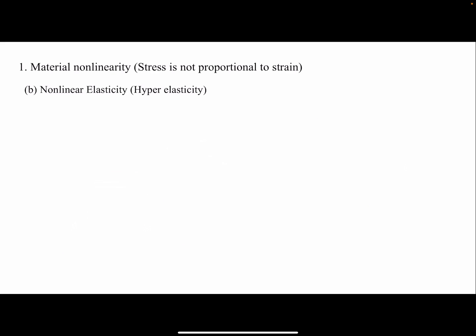The other form of material non-linearity is non-linear elasticity, where we are talking about non-linearity in the elastic region. Several materials such as polymers, rubber, and specifically foams show non-linear elasticity. Hyper-elasticity is a model that we use for non-linear elasticity, and we can use it when our material is isotropic, incompressible, and independent of strain rate.